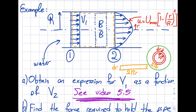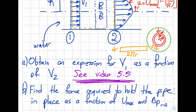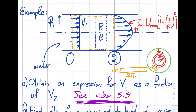Today I'm going to pick up on a question from the conservation of mass section and ask: what is the force required to hold the pipe in place? What's going on here is we have an inviscid or uniform velocity profile at section one — kind of like a black box — and then it transfers into a viscous velocity profile where u is a variable velocity.